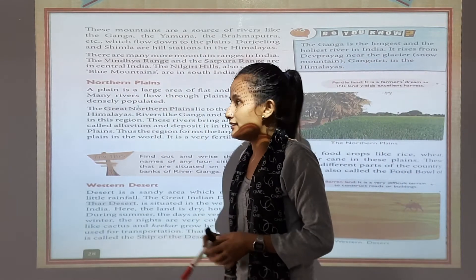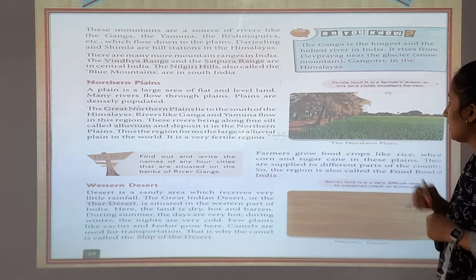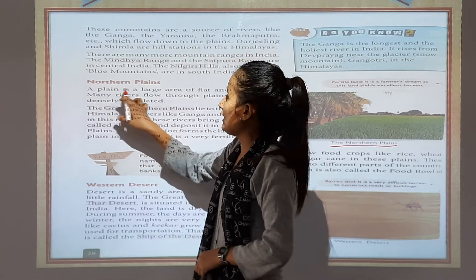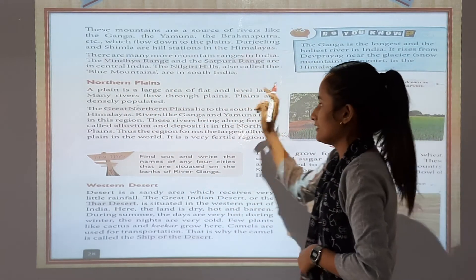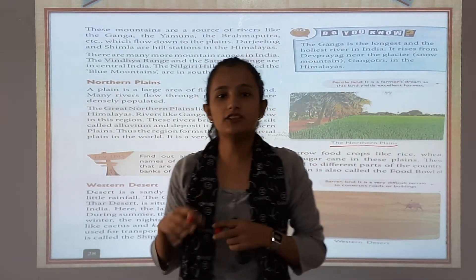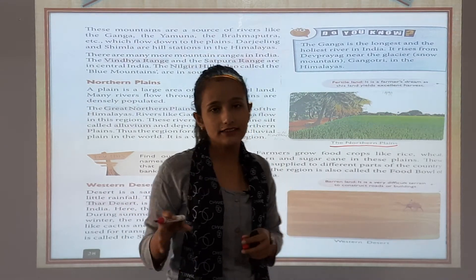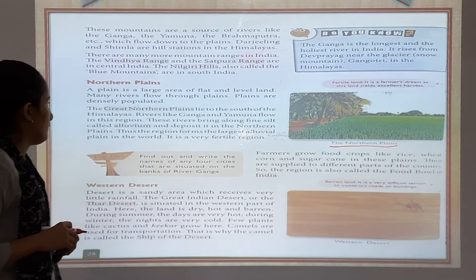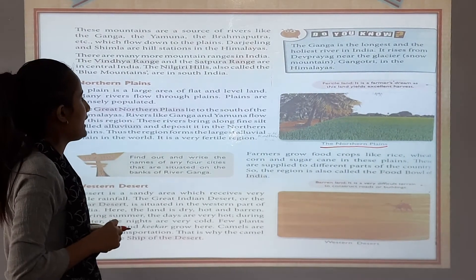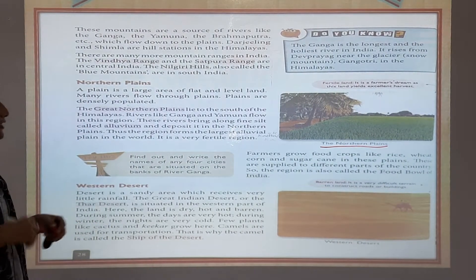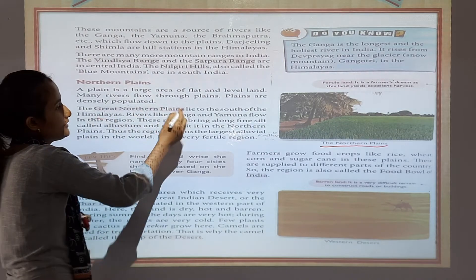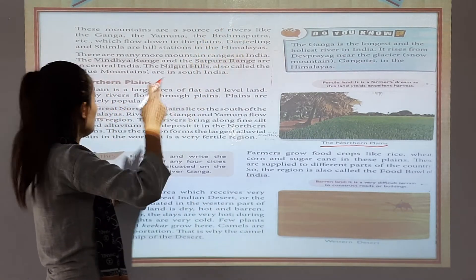Now, northern plains. A plain is a large area of flat, level land. Many rivers flow through plains. The great northern plains lie to the south of the Himalayas.